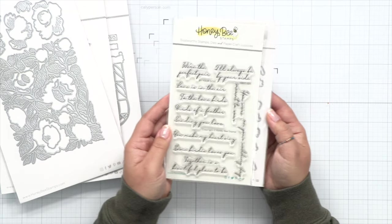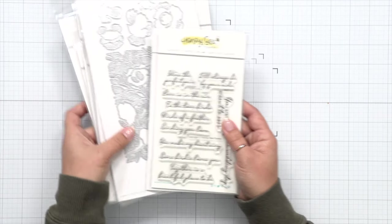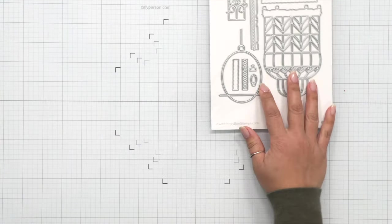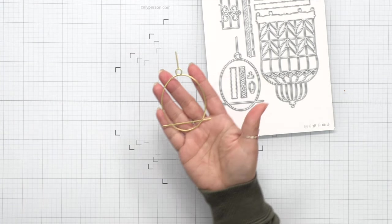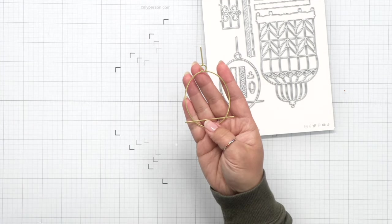And last but not least, we have a sentiment set that is called By Your Side. And it actually coordinates really well with the Lovebirds and Birdcage dies, which takes us into our first card.